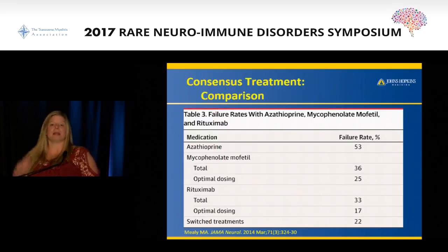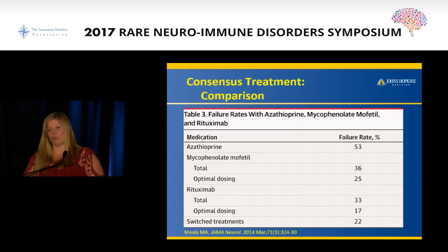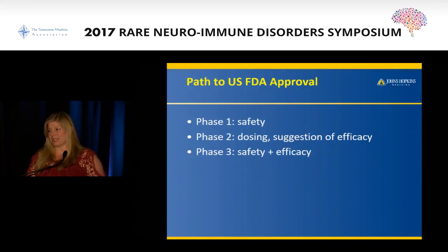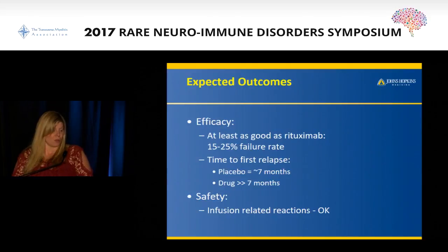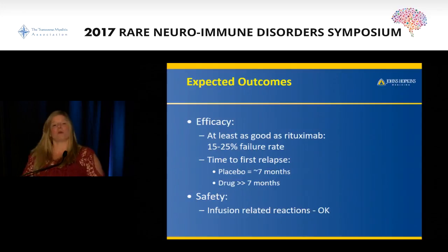There is a consensus among many NMO practitioners that azathioprine, mycophenolate, and rituximab are among the most popular choices. We combined data from Johns Hopkins, UT Southwestern, and Mayo Scottsdale to look at what the failure rates were, which can help inform which products to try in the future. From there, there's a certain path required for FDA approval: you need to make sure the drug is safe before confirming the right dose, before confirming efficacy. We want to make sure new therapies are at least as effective as what we standardly use now - arguably rituximab is the best of our current treatments - and we definitely don't want to worsen patients in any way.